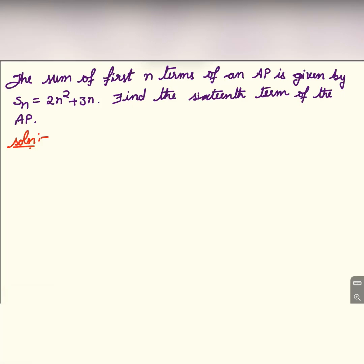Namaste everybody, welcome to my channel. The sum of first n terms of an AP is given by Sn = 2n² + 3n. Find the 16th term of the AP. You have to find out a₁₆, that is a + 15d.